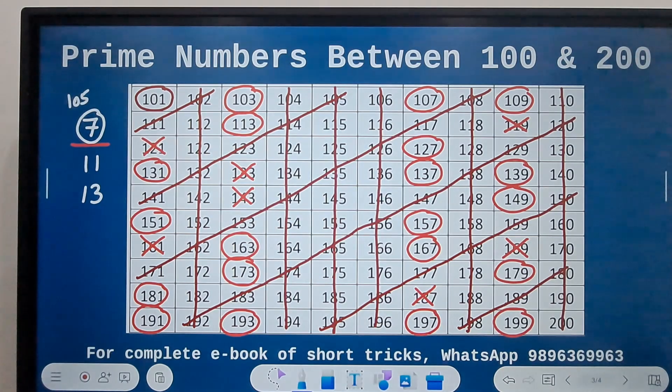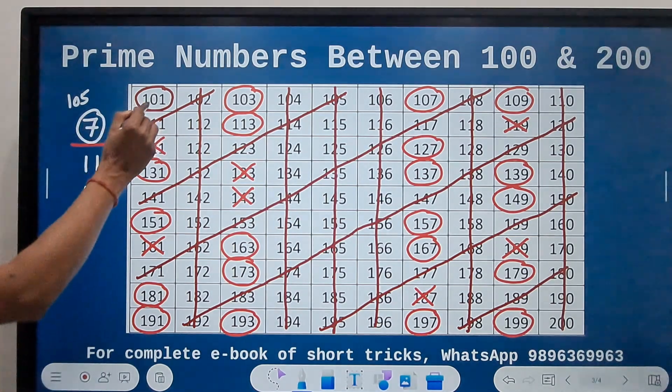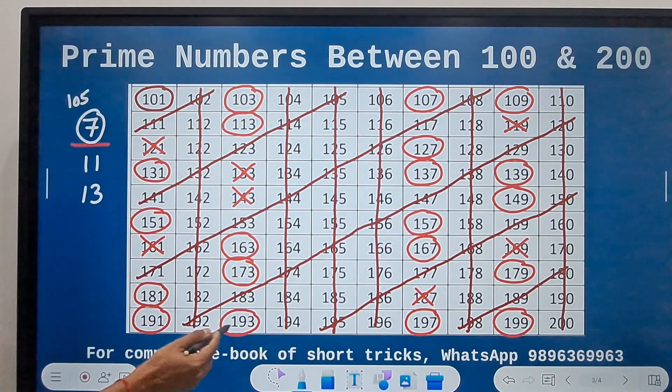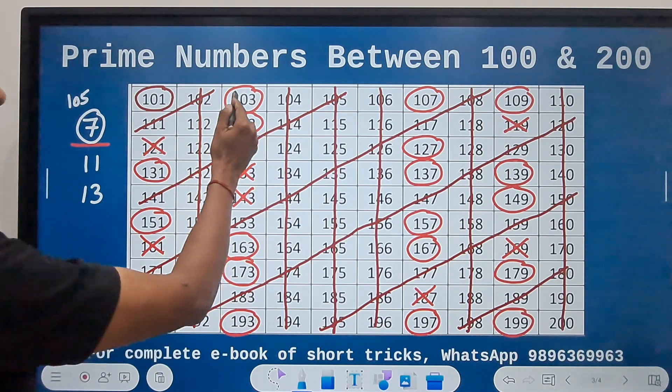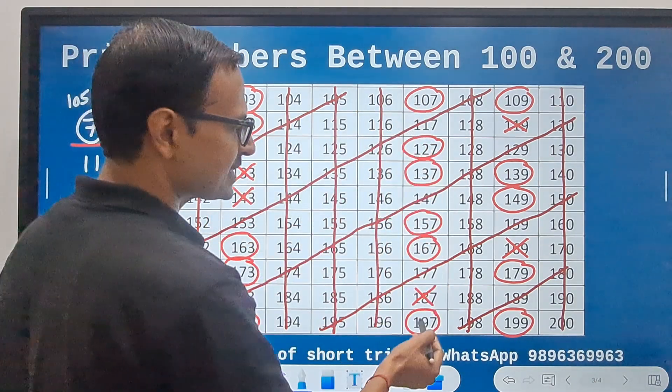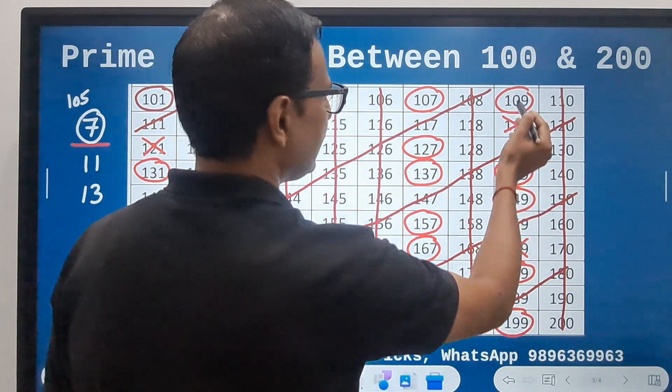Let's count the number of primes now: 1, 2, 3, 4, 5, 6, 7, 8, 9, 10, 11, 12, 13, 14, 15, 16, 17, 18, 19, 20, 21.